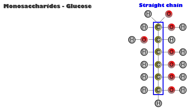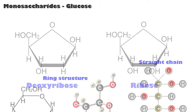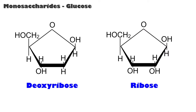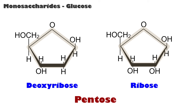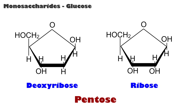Glucose can have a straight chain of carbon atoms; however, it's more common to find them in a ring structure. Two other 5-carbon sugars, or monosaccharides, called pentose, used in nucleic acid synthesis are deoxyribose and ribose.